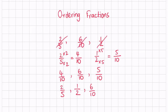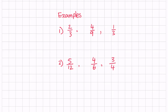We have ordered those fractions from smallest to largest. Let's look at the next example: two thirds, four ninths, and one third. We can see that three and three are both factors of nine, so we can change them into nine. Multiplying two thirds by three gives us six over nine, and multiplying one third by three gives us three over nine. Out of six over nine, four over nine, and three over nine, three over nine is the smallest, so we write one third first, then four over nine, then two thirds.